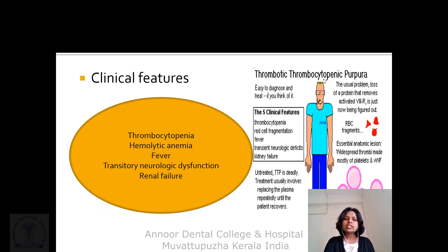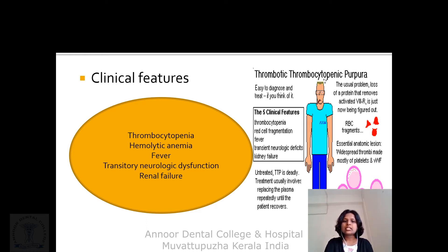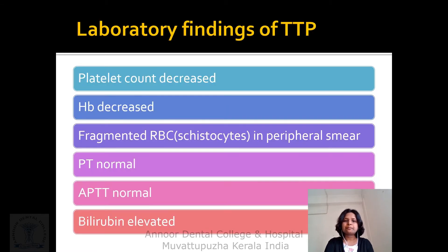Clinical features of TTP include the usual features of thrombocytopenia along with hemolytic anemia, fever, transitory neurologic dysfunction, and renal failure. Laboratory findings show decreased platelet count, decreased hemoglobin, fragmented RBC schistocytes seen in the peripheral smear, normal prothrombin time, normal APTT, and elevated bilirubin due to hemolysis.